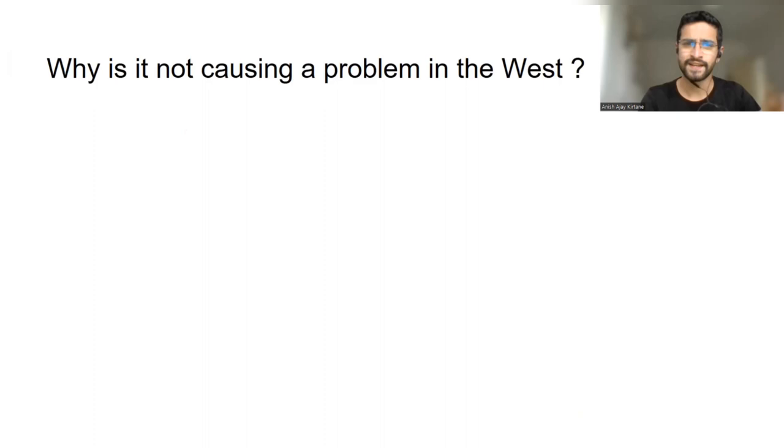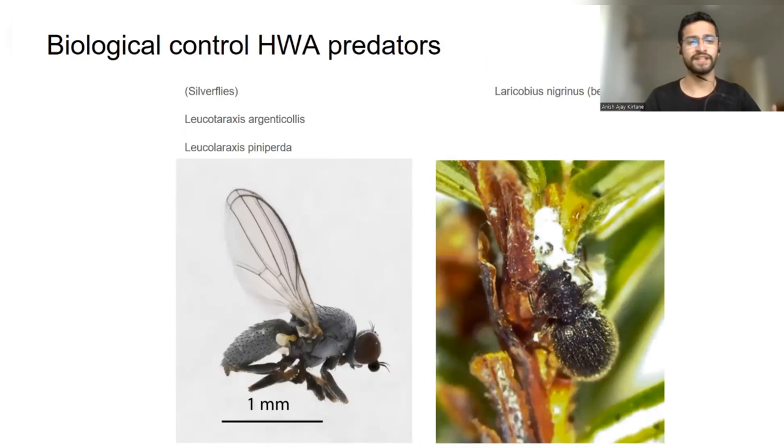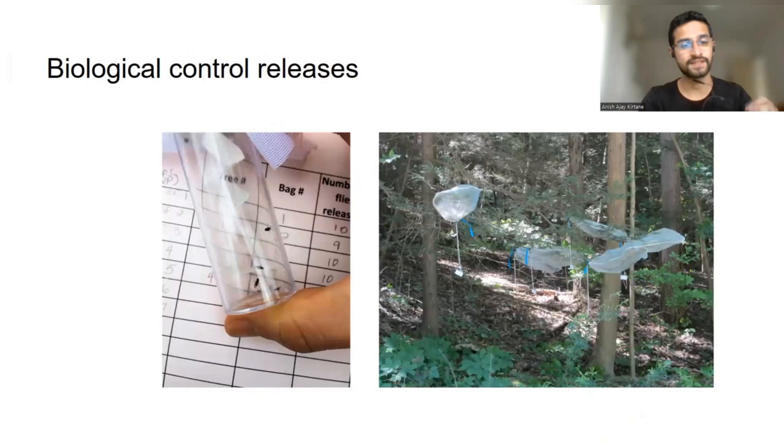So why is it that it's not a problem in the West? Well, I spoke about tree resistance, but also, the ecosystem has adapted. Many insects have learned to specialize on eating hemlock woolly adelgid. There are two species of flies, silverflies, and one species of beetle that we will talk about a lot in this presentation. So there are four insects that we are concerned about: the hemlock woolly adelgid, and then the three other species that feed exclusively on the hemlock woolly adelgid.